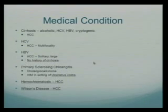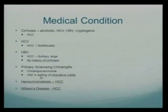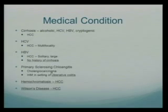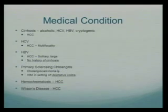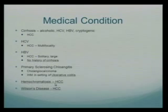Next is primary sclerosing cholangitis, which can result in cholangiocarcinoma. An important thing to remember is if you have an incidental hepatic mass in the setting of a patient with ulcerative colitis — that goes hand-in-hand with primary sclerosing cholangitis — so the important diagnosis to keep in mind would be cholangiocarcinoma. Other reasons for malignancy in the liver would be hemochromatosis and Wilson's disease, both of which can result in hepatocellular carcinoma.